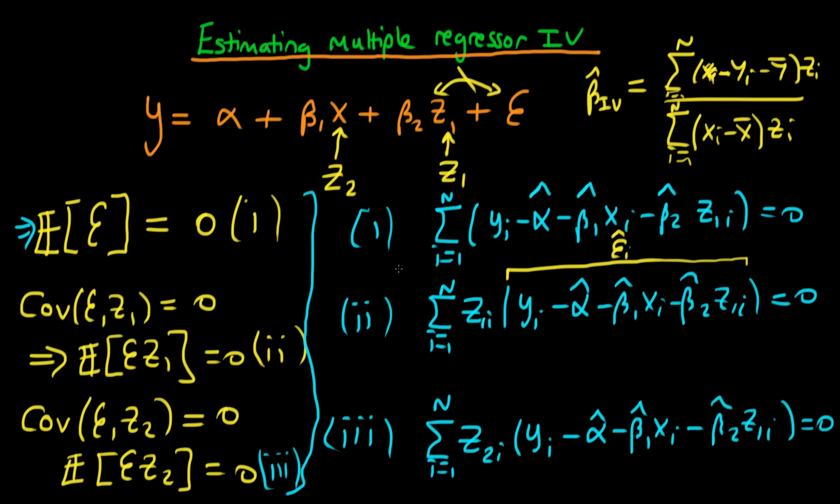So now we've got three equations and we've got three unknowns. Essentially we're solving for alpha hat, beta1 hat and beta2 hat. So we're able to do that because we've got three equations and three unknowns.